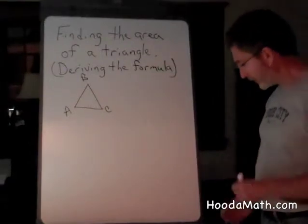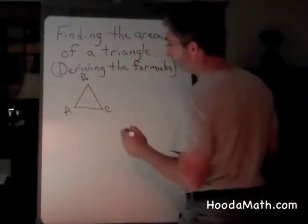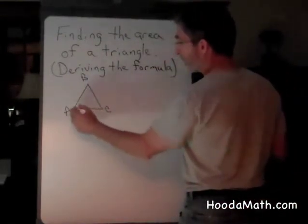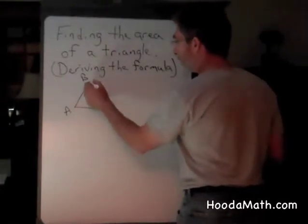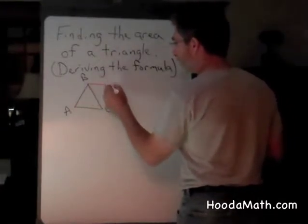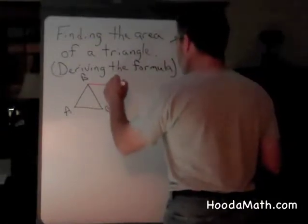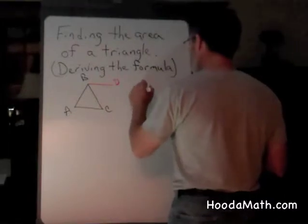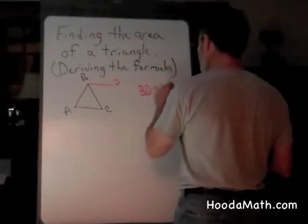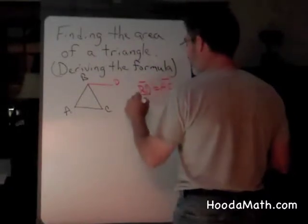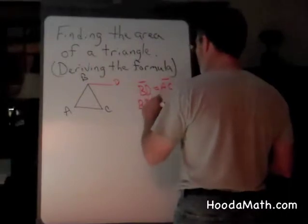The first thing we do is we make a line the same length as AC, we'll call it BD. BD is equal to AC in length, and BD is also parallel to AC.